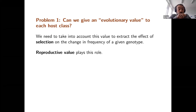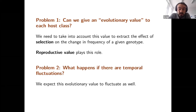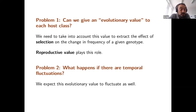The way to do that — and it has been known for quite some time — is to use reproductive value. I'm going to make the first part of the talk about how we can use reproductive value to make sense of this. The second problem is what happens when there are temporal fluctuations: in that case, the quality of the host varies over time because the abundance of different host classes changes, and we expect this reproductive value to fluctuate as well. Classically, we don't have a very dynamic definition of reproductive value because we usually define it as an eigenvector for equilibrium dynamics. I'm going to show how we can extend this idea to take into account temporal fluctuations.